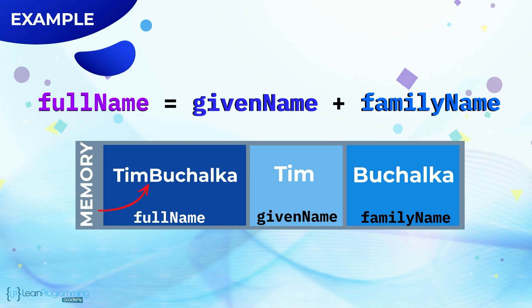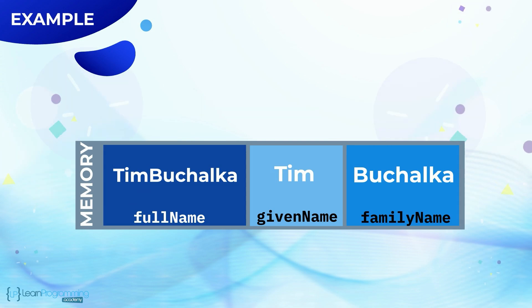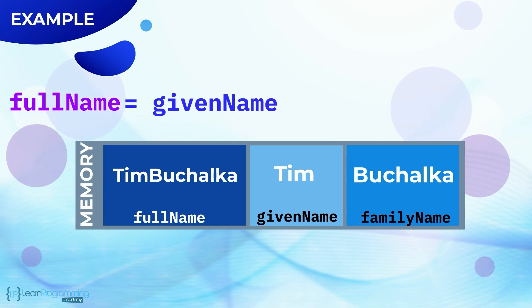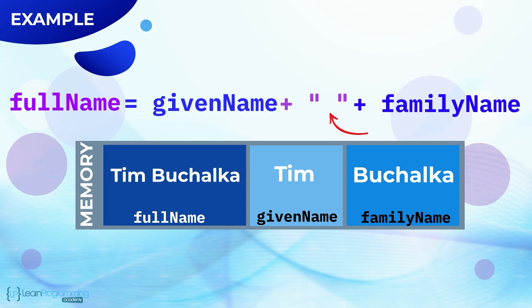In order to have a space between them, the programmer would need an assignment expression like this one. Full name equals given name plus two double quotes plus family name, where the double quotes have a white space character stored within it, resulting in Tim space Buchalka being stored in the full name memory location.